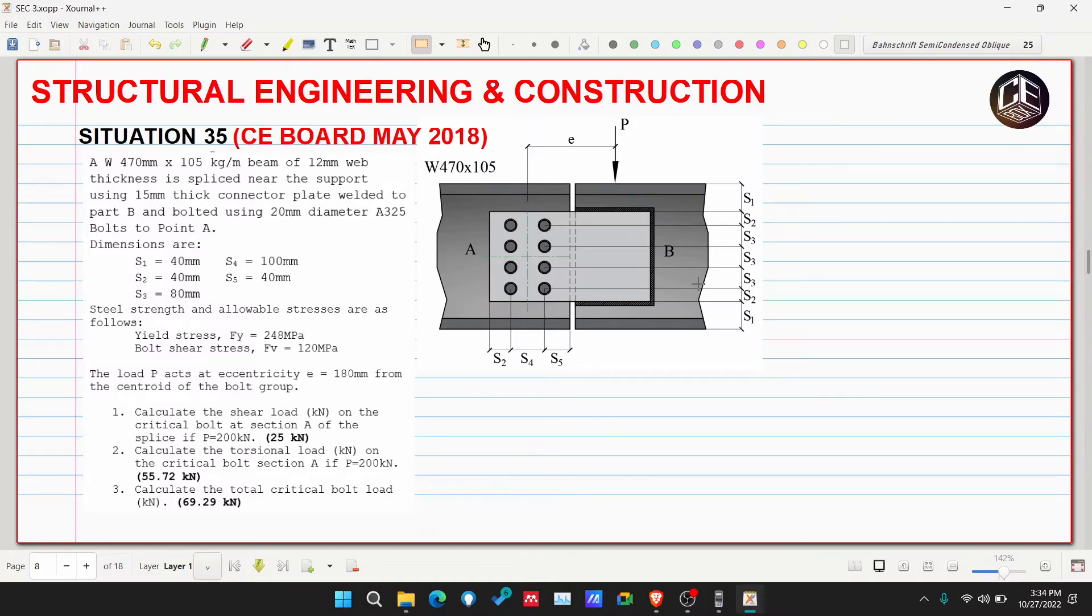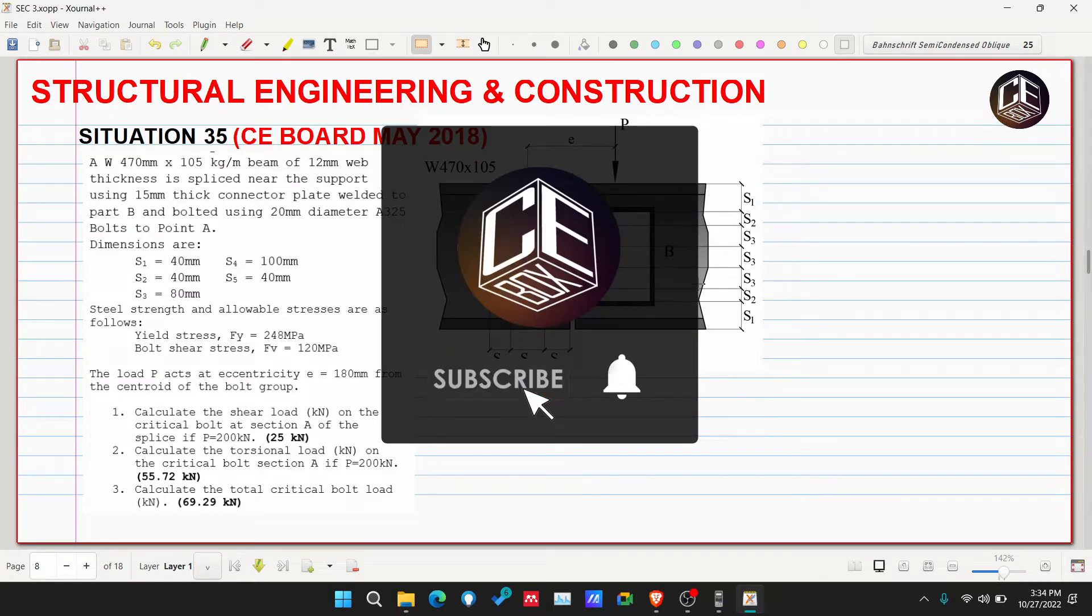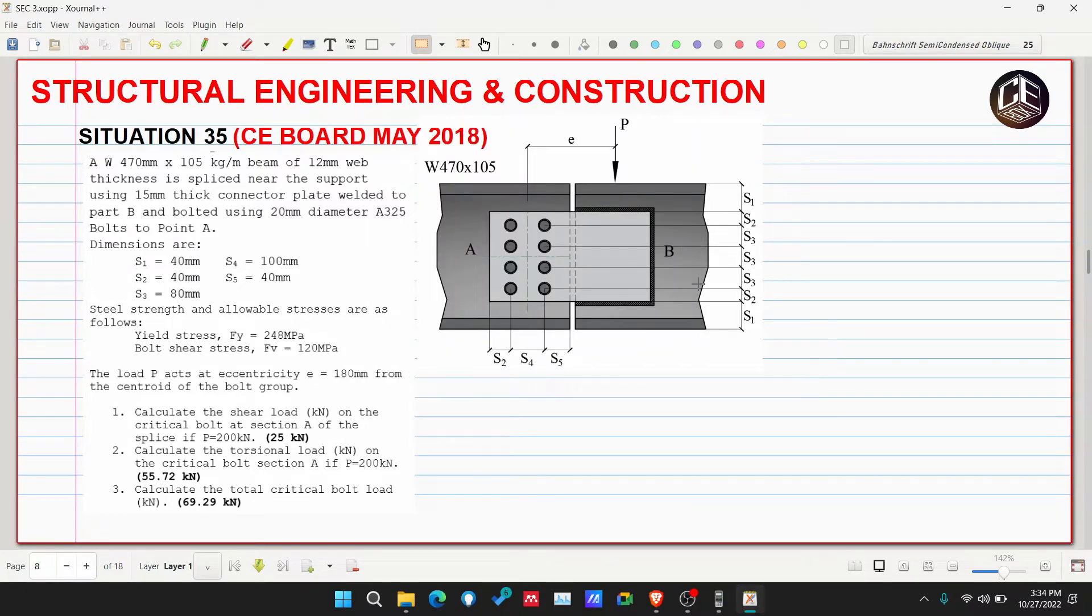Hey guys, welcome back to CE Box tutorial channel. This is situation number 35 from the CE Board exam May 2018 for structural engineering and construction. A W470 millimeter by 105 kilogram per meter beam of 12 millimeter web thickness is spliced near the support using 15 millimeter thick connector plate welded to part B and bolted using 20 millimeter diameter A325 bolts.